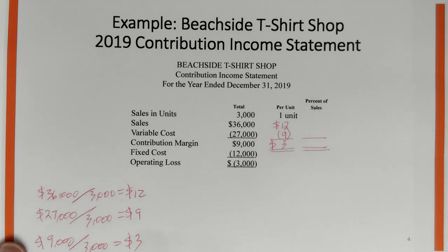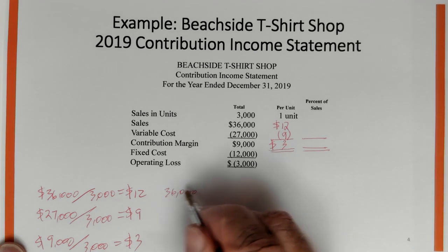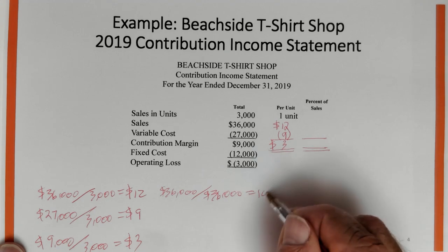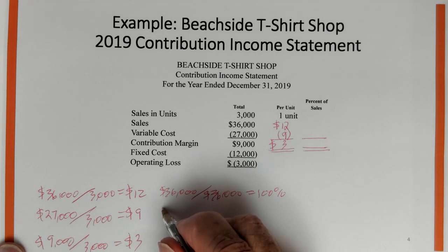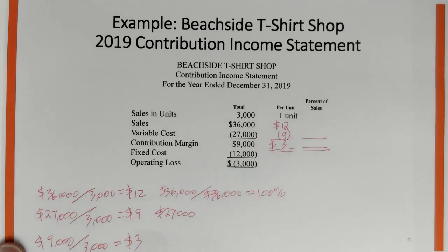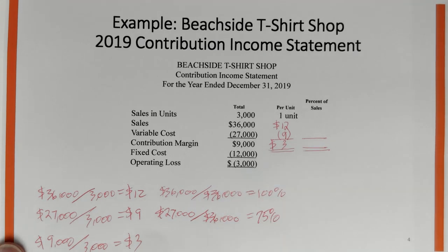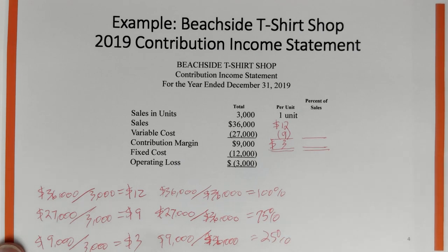Now for the percentage columns — sales are 100% of themselves. For variable cost, $27,000 divided by total sales of $36,000 gives a variable cost ratio of 75%. The contribution margin is $9,000 divided by $36,000, which gives 25%.